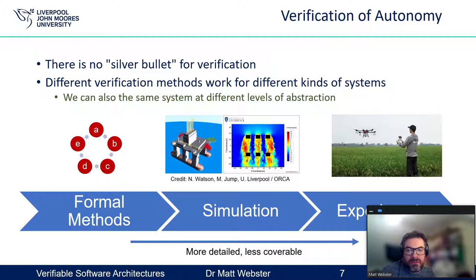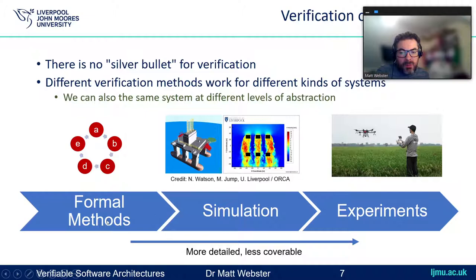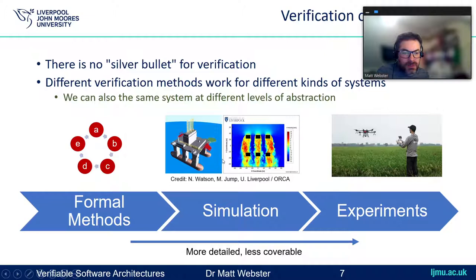The key thing is there's no silver bullet for verification. Different verification methods work at different levels of abstraction and also for different kinds of systems. We might come up with a spectrum of different verification methods — for example, formal methods at one end, going through simulation and experiments. At the left-hand side of this spectrum, you've got very abstract models of the system. In formal methods, we might have an abstract state diagram with a finite number of states and actions between those states.